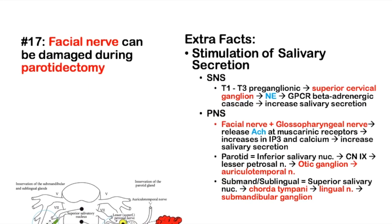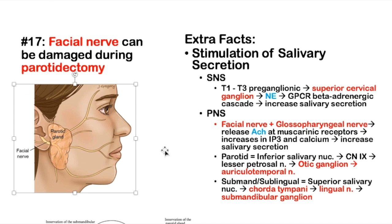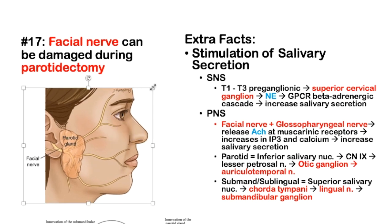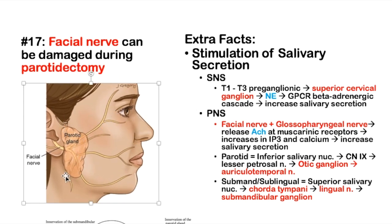Fact 17. The facial nerve can be damaged during parotidectomy. The parotid gland is situated in the temporal region, and the facial nerve runs literally through the parotid gland. The parotid gland receives innervation from both sympathetics and parasympathetics. The parotid, submandibular, and sublingual glands all have the same sympathetic nervous system innervation.